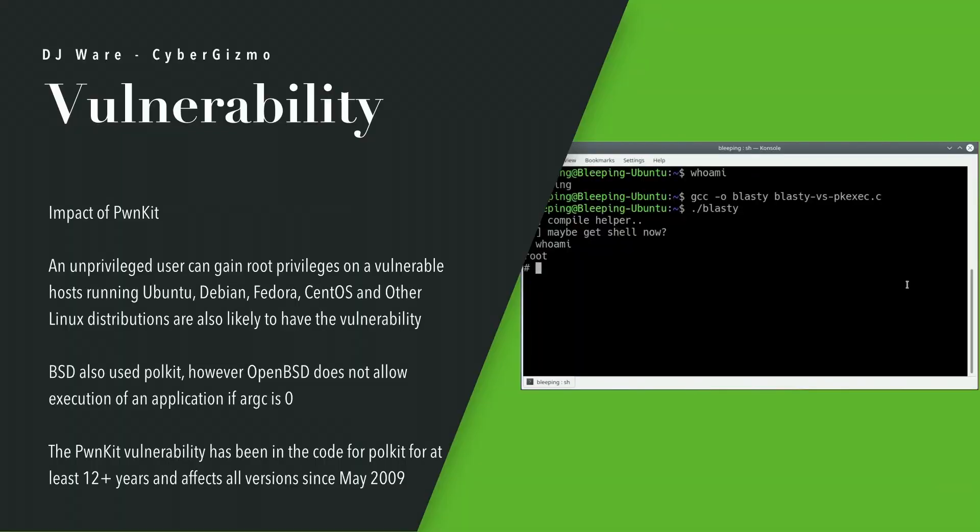What is this vulnerability? An unprivileged user — just a regular user — can gain full root privileges on a vulnerable host. Affected systems include Ubuntu, Debian, Fedora, and CentOS, and there are other Linux distributions likely to have the vulnerability that weren't tested. BSD also uses Polkit. However, OpenBSD's kernel does not allow execution of an application if the argc passed to pkexec is zero, which is a wise safeguard given the problems we've had with C and C++.